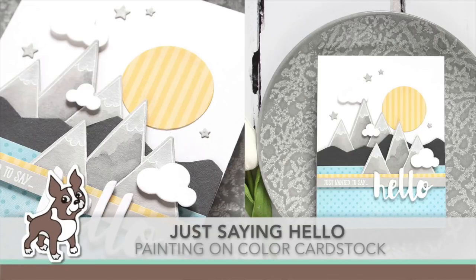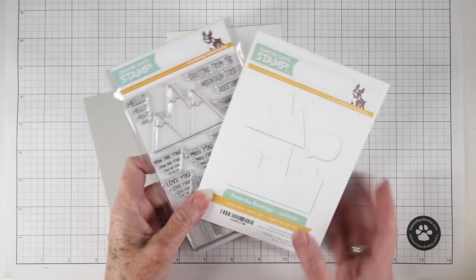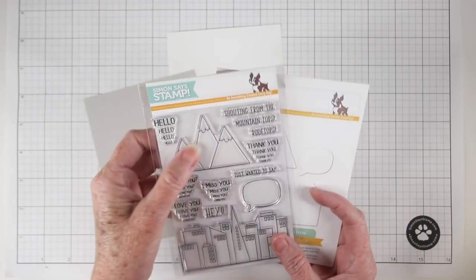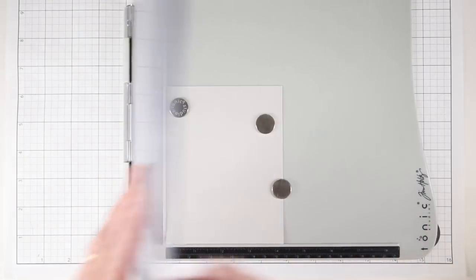Welcome everyone, it's Sherri Carroll for simonsaysstamp.com and I have a card I've created that I'm titling 'just say hello' where I've painted on some color cardstock. I am starting off with the From the Rooftops stamps and coordinating dies from Simon Says Stamp and I'll be using the mountains for my card. For the base of my mountains I'm using some Simon Says Stamp fog cardstock.